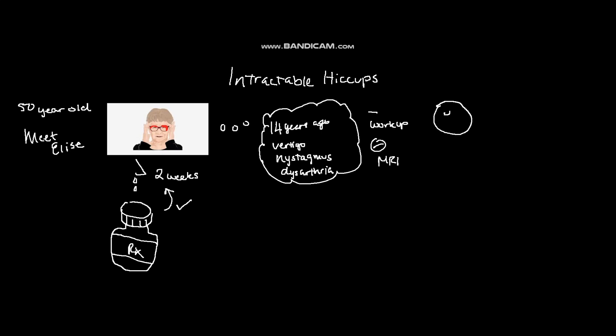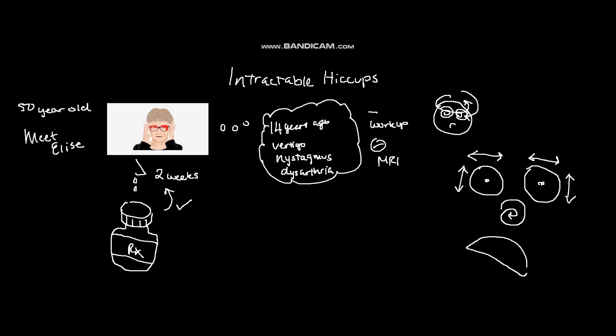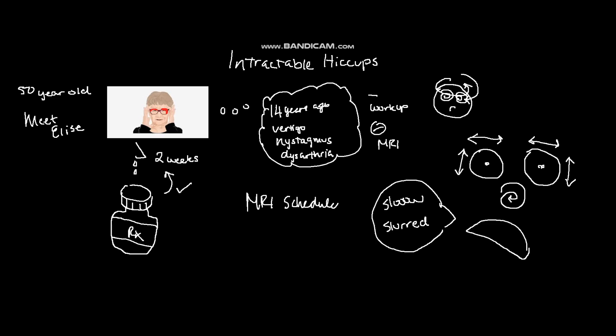Vertigo results in the sensation of feeling off balance, which may be perceived as you or the world around you spinning. Nystagmus describes repetitive involuntary eye movements that can be from side to side, up or down, or in a circular pattern all around. Dysarthria results in difficult-to-understand, slow, or slurred speech, which may be caused by neurological disorders making controlling speech most difficult.